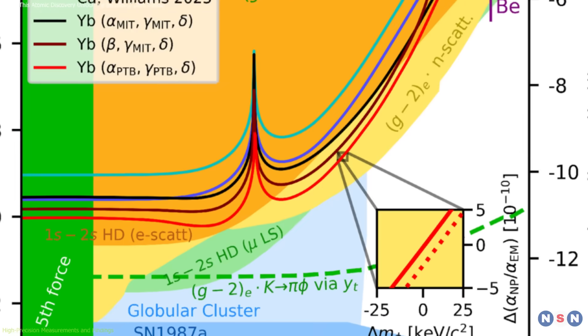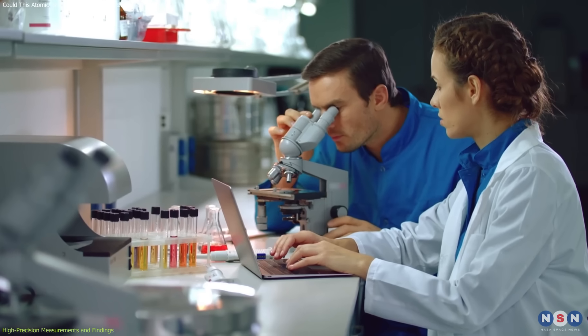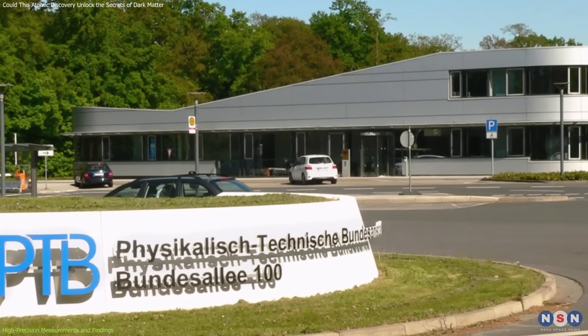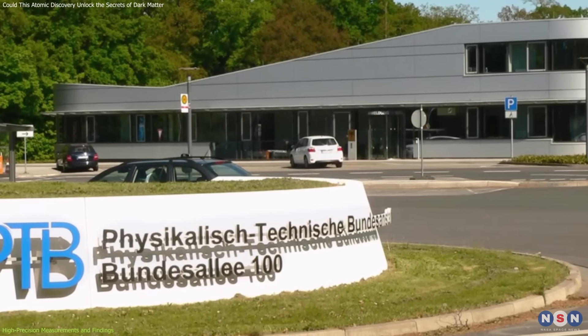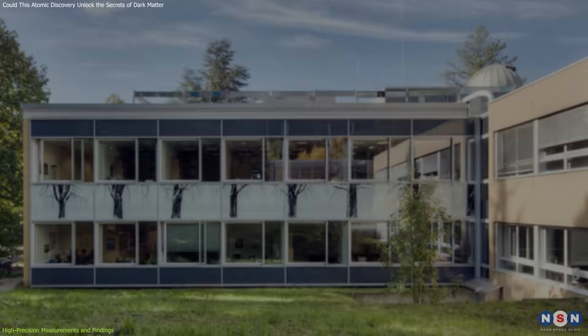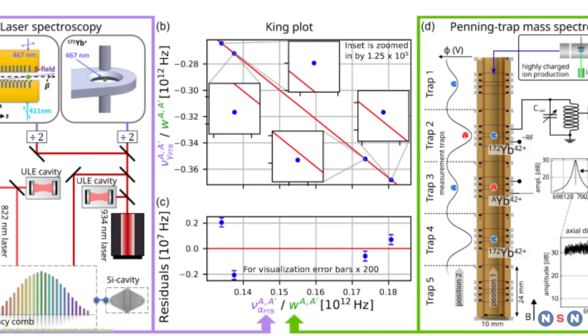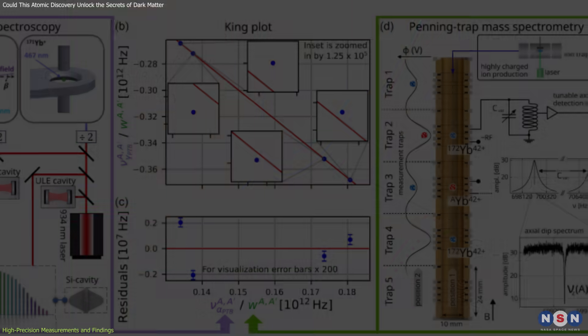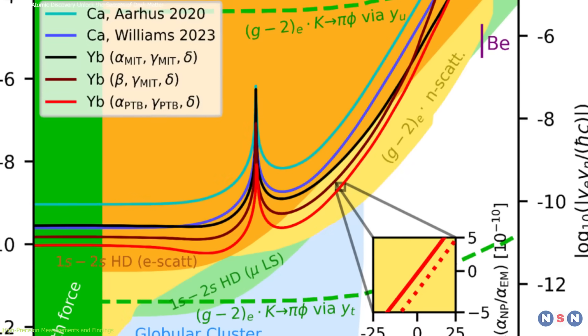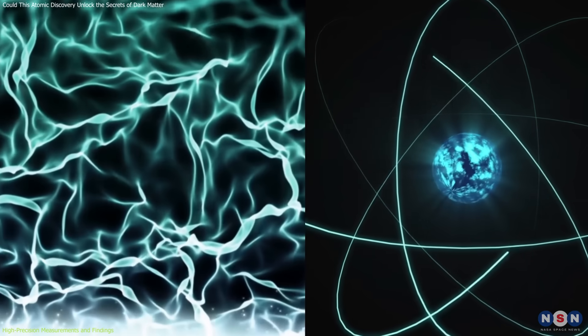To determine the true cause of the anomaly, an international team of researchers from the Physikalische Technische Bundesanstalt, PTB in Germany, and the Max Planck Institute for Nuclear Physics, MPIK, carried out ultra-precise measurements of ytterbium isotopes. Their goal was to confirm whether the isotope shift was a genuine anomaly, and if so, understand what was causing it.